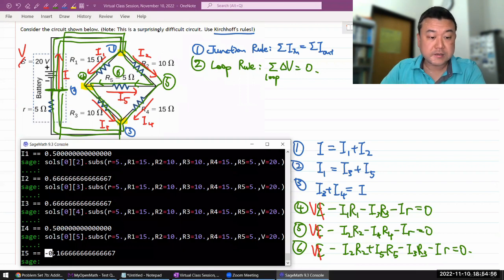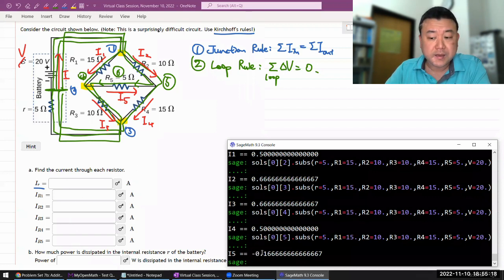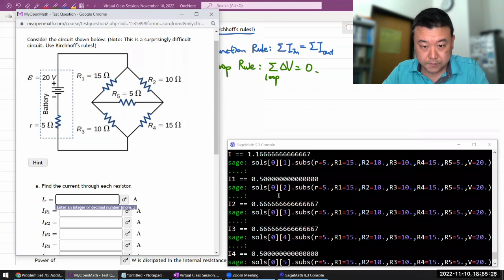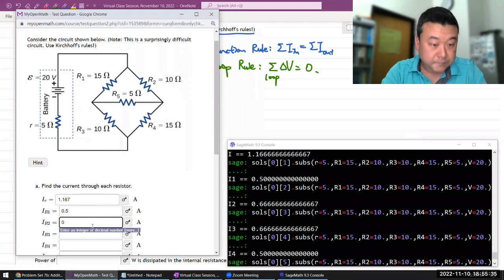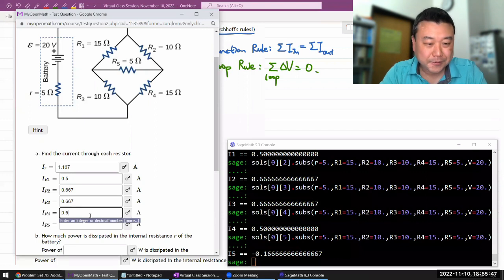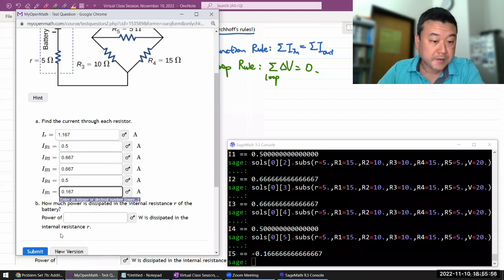So I5, this current, when I get a numerical answer you see that it's negative. And that's what tells you the direction of current that I picked here is the wrong direction. So I need to flip it for the actual direction the current goes. I think for the purpose of entering the answer they want all the positive answers, so I won't include this minus sign. So I of 1.167, IR1 of 0.5, IR2 of 0.667, IR3 of 0.667, I4 of 0.5, and IR5 of 0.167. That's it.